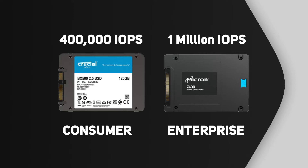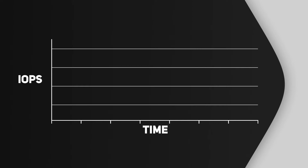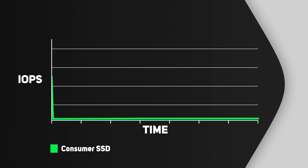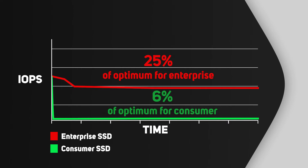More importantly, the key factor is performance over time. The IOPS figures on most manufacturers' data sheets represent peak performance under optimal conditions, unlikely to be sustainable over longer periods. However, tests show that enterprise SSDs maintain a much higher percentage of their optimal performance consistently — around 25% of optimum for enterprise versus just 6% for consumer over long periods of running. This is perhaps a more compelling reason to use enterprise drives in your server than raw speed alone.